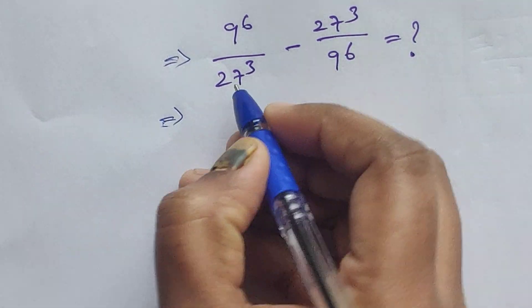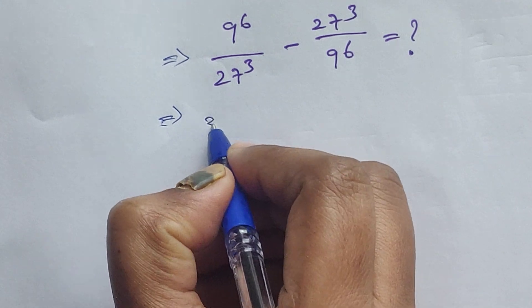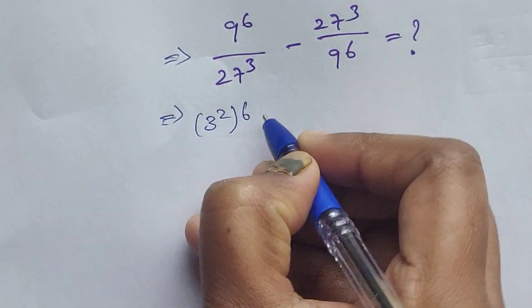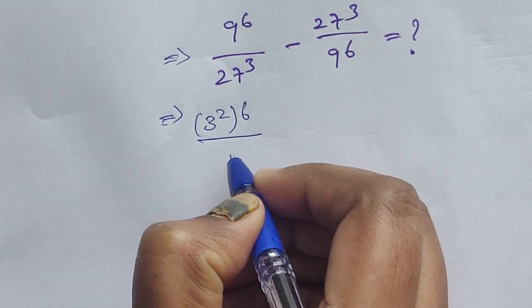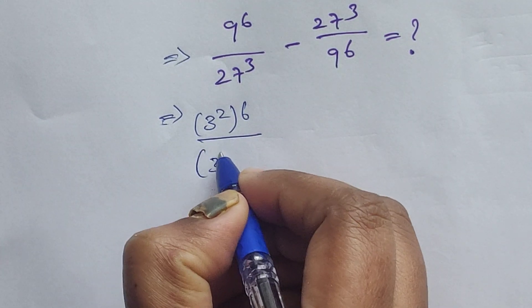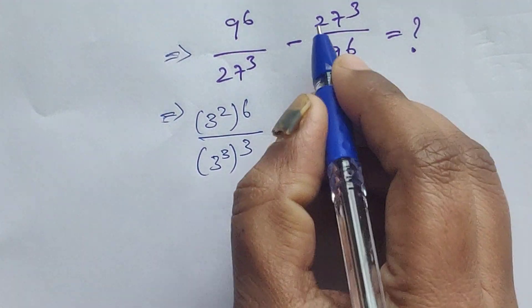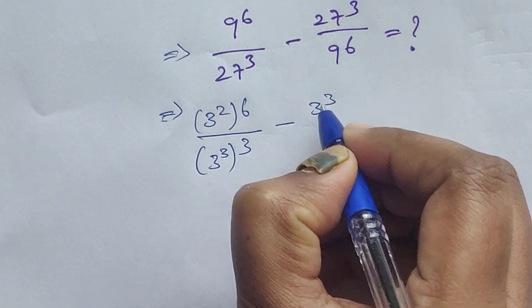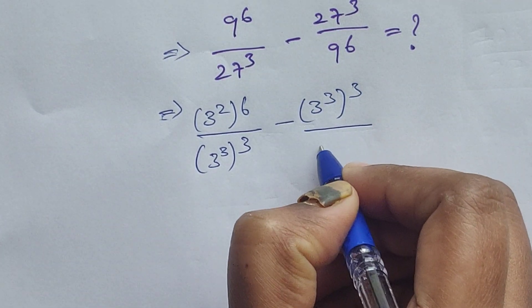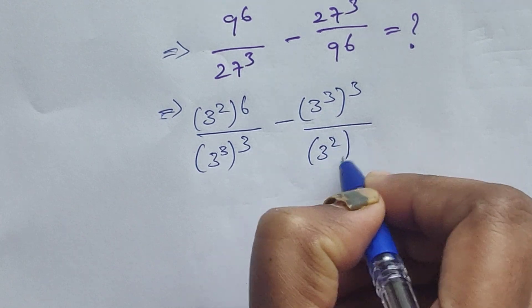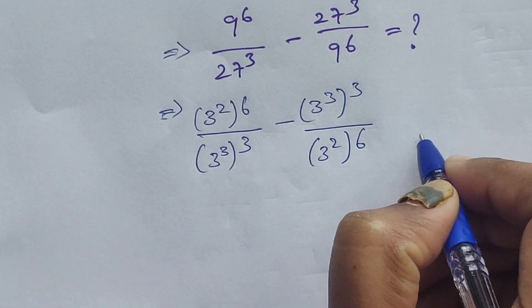So 9 we can write as 3 squared, so (3²)^6. And 27 we can write as 3 cubed, so (3³)^3. Then minus (3³)^3 divided by (3²)^6. Now I am going to apply one formula.